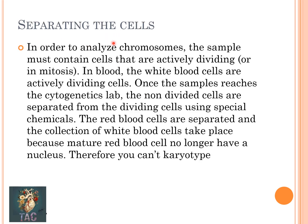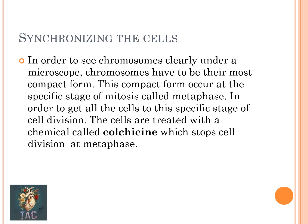The next stage is to separate the cells. To analyze chromosomes, the sample must contain actively dividing cells. In blood, white blood cells are the actively dividing cells. Once the sample reaches the cytogenetics lab, non-dividing cells are separated from dividing cells using special chemicals. Mature red blood cells are separated out because they do not have a nucleus and cannot be used for karyotyping.